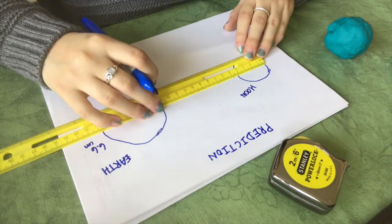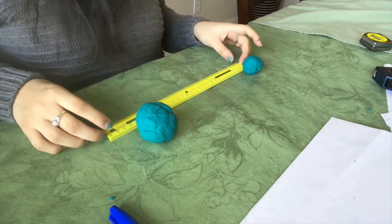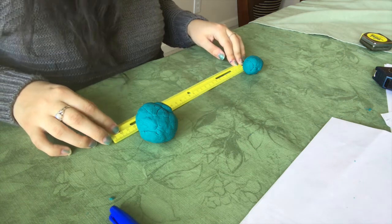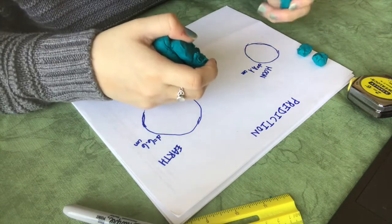Then take your ruler and measure the diameter of each — the Earth and the Moon. Mariana, I want you to take your Earth and Moon and space them out on the table to give an idea of how far apart you think they would be relative to their size. I think they would be about 25 centimeters apart.